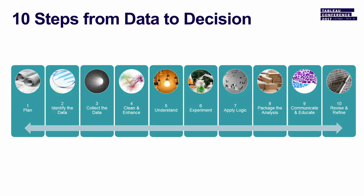So I realized we need to figure out what these 10 steps are - completely arbitrary - 10 steps from data inception to data decision. I'm sure somebody could come up with 15 or 20 steps, but I like 10. So we're going to talk about each one briefly. You've got to plan, identify the data, collect it, enhance it, understand it, experiment with it, apply logic, package it, communicate, and then revise. Building a dashboard is step number eight. What I realized is that people were diving in and doing dashboard analysis, building dashboards - but that's one-tenth of the whole process. If you don't get the whole concept, of course it's going to fail. You have to understand at least what's going on.